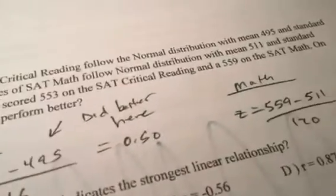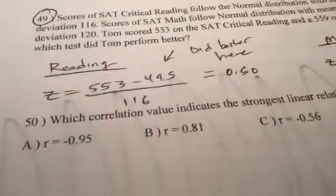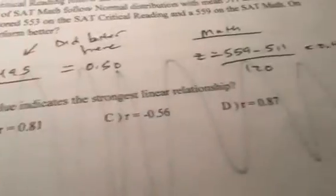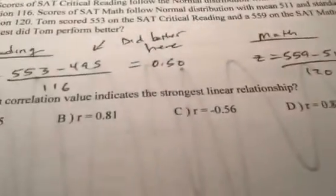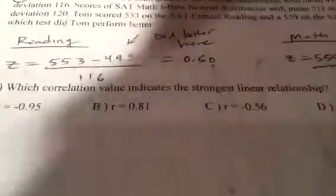Reading scores follow normal distribution. SAT and SAT math. So find the Z-scores for both. And whichever Z-score is better, folks, that's where you did better on.